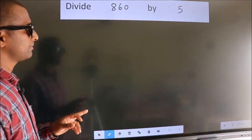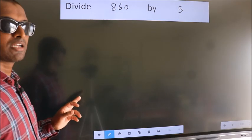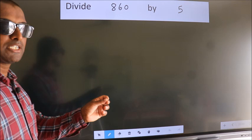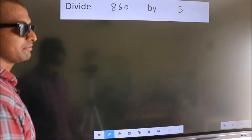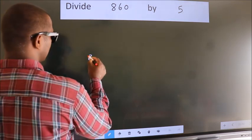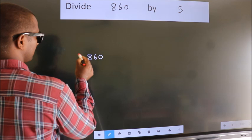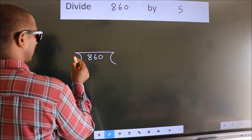Divide 860 by 5. To do this division, we should frame it in this way. 860 here, 5 here.